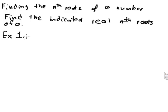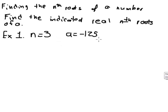Here's example one. Let's say n equals 3 and a equals negative 125. Notice this is odd and this is negative. That means our answer will be negative, and there will just be one of them. If n is odd, you will just have one answer.